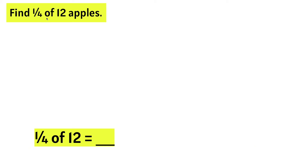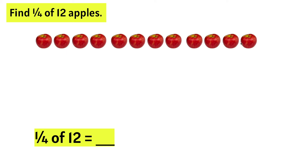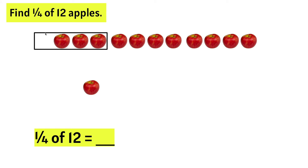Find one-fourth of 12 apples. Remember, we need to find a fraction of a number, or part of a whole. Let's start by making the 12 apples. This fraction says one out of every four, or one-fourth. So, let's separate four apples and we need one out of every four, or one-fourth.